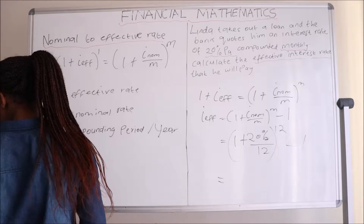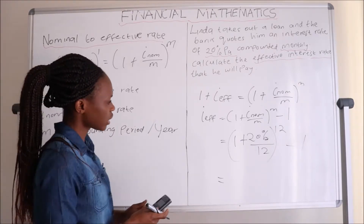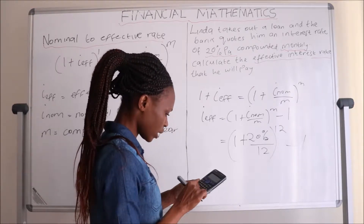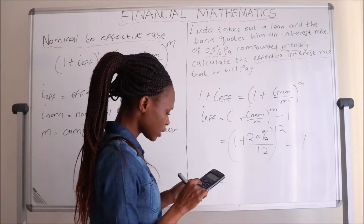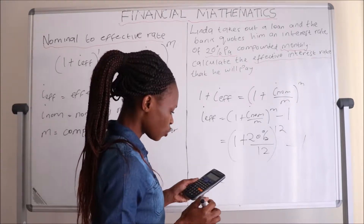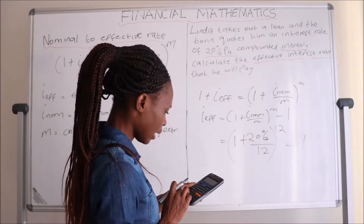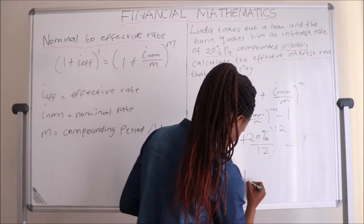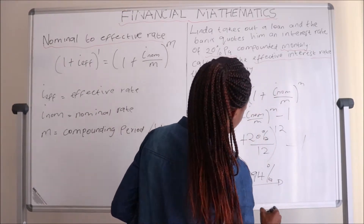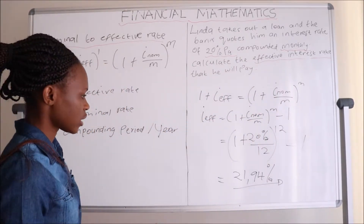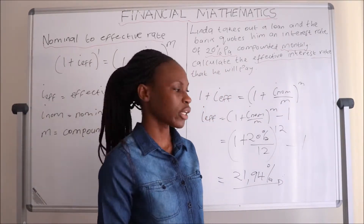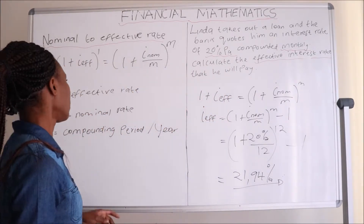Punching that into a calculator gives us the effective interest rate directly. That will be (1 + 0.20/12)^12 − 1, which gives us 0.2194, and multiplying by 100 gives us 21.94%. This is the effective interest rate. You see, the effective interest rate is always higher compared to the nominal interest rate.